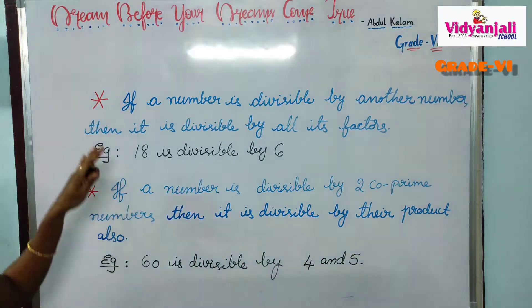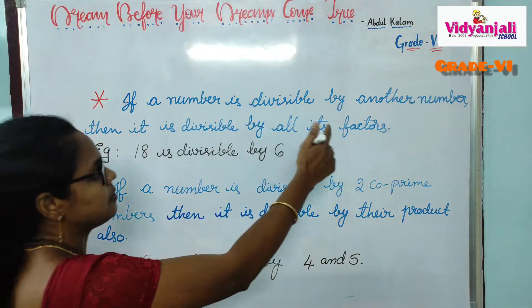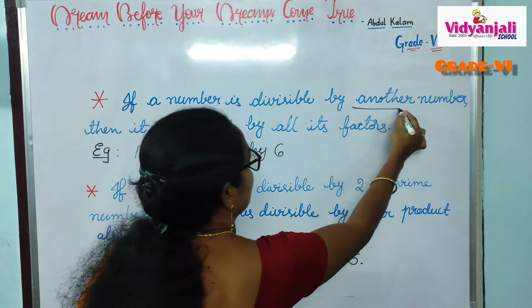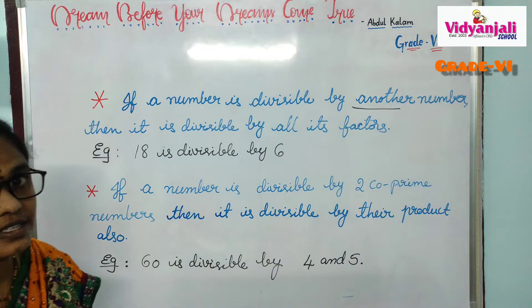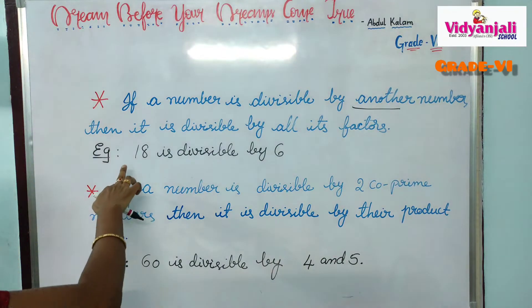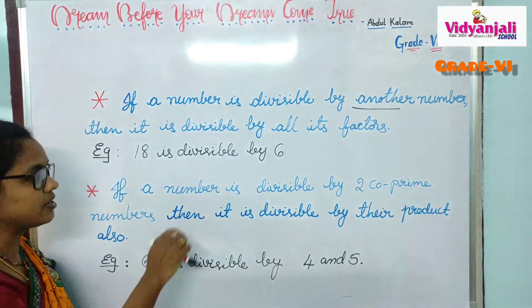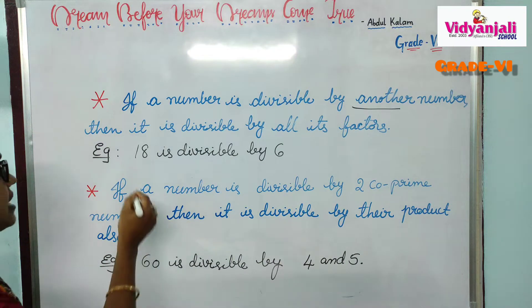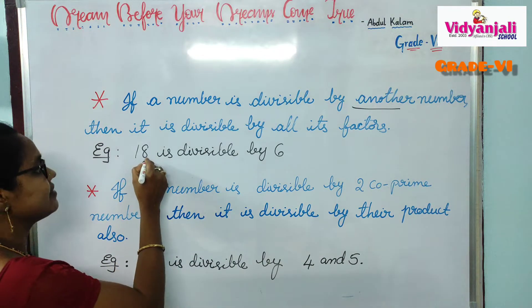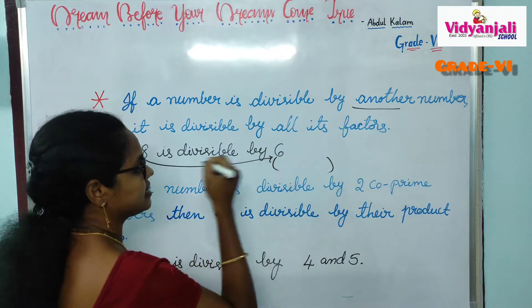See here, we have the first rule. If a number is divisible by another number, then it is divisible by all its factors. For example, 18 is divisible by 6, because 18 comes in the 6 times table. So 18 is divisible by all the factors of 6.